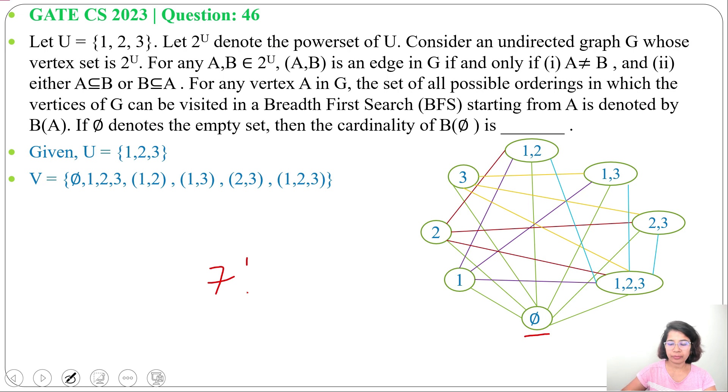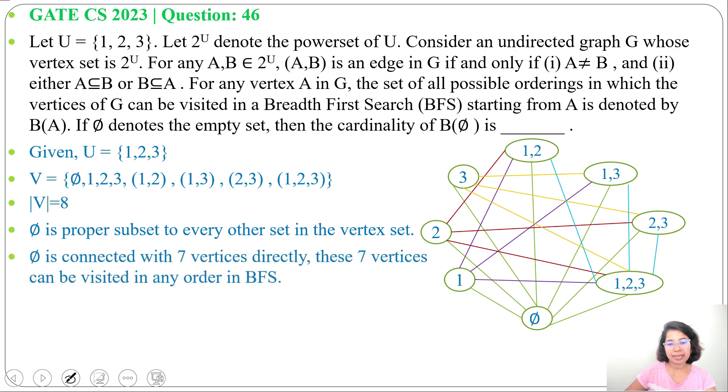It is asking starting from φ how many different BFS orderings are possible. Total number of vertices equals 8. φ is connected with other 7 vertices. So there will be total 7 factorial BFS orderings possible.